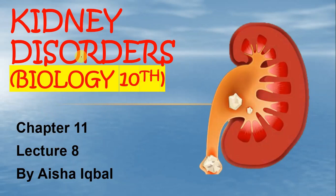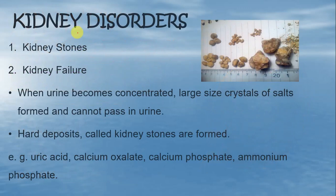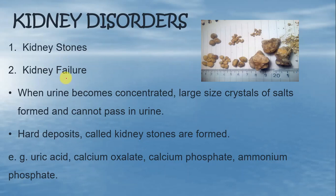What is meant by kidney disorders? Kidney disorders mean when kidneys are not working normally and they become out of order. There are two types of kidney disorders: Number 1, kidney stones, and Number 2, kidney failure. Kidney stones mean kidney के अंदर stones का बन जाना या पत्थरी का बन जाना. Kidney failure means kidney की normal functioning का disturbed हो जाना.